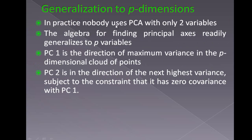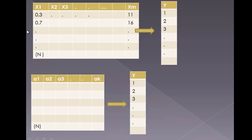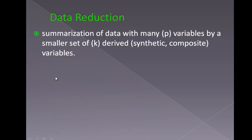Nobody uses PCA with only two variables in practice — the algebra readily generalizes to p variables. PC1 is in the direction of maximum variance, PC2 in the direction of the next higher variance, and so on. The principal components are orthogonal, so their covariance is 0. Each principal axis is a linear combination of the original variables: PCj is a linear combination of the originals, creating a1, a2, a3 as linear combinations of x1, x2, x3 up to xm with various weights — weights can also be 0.